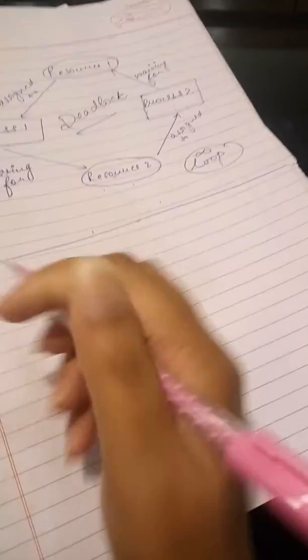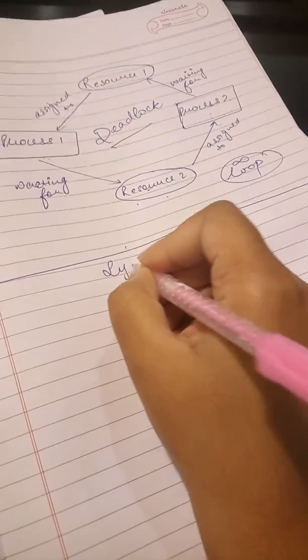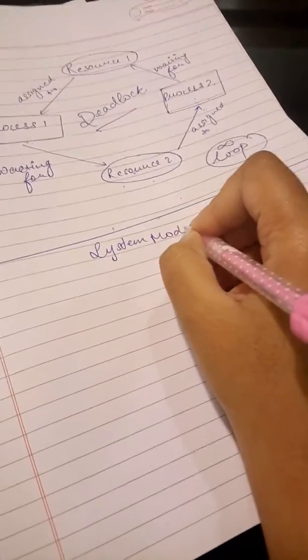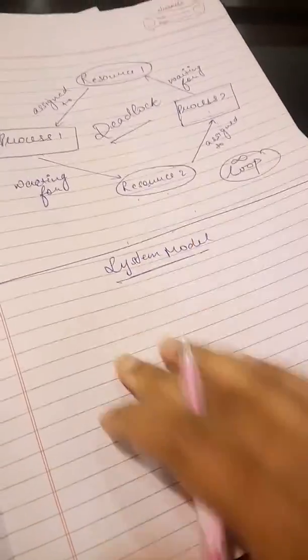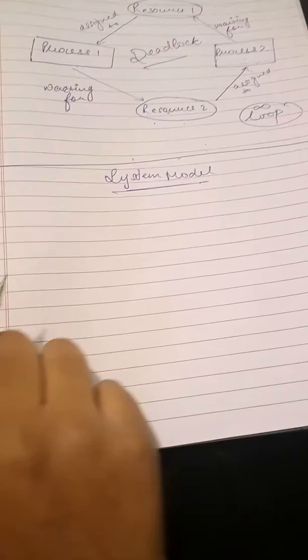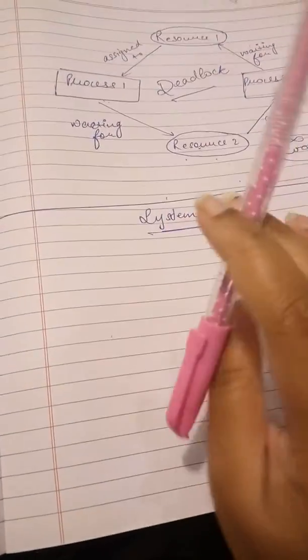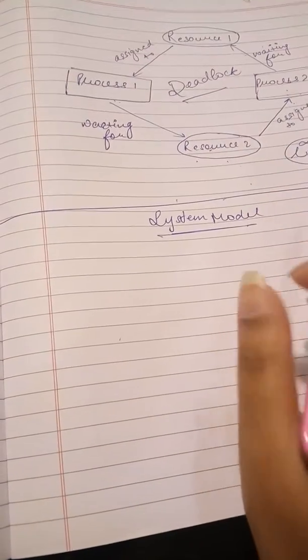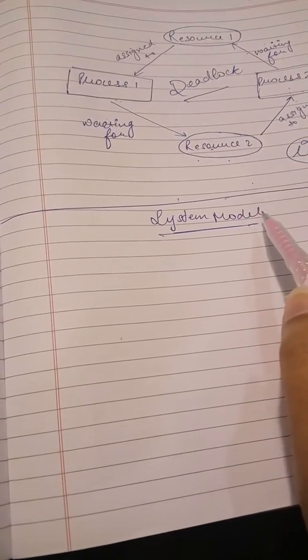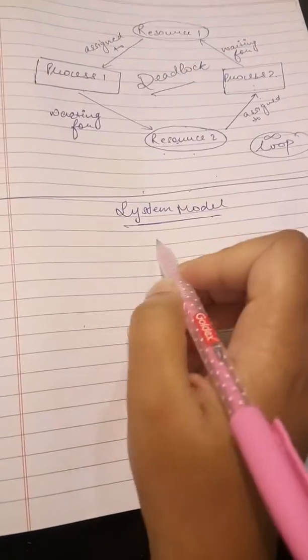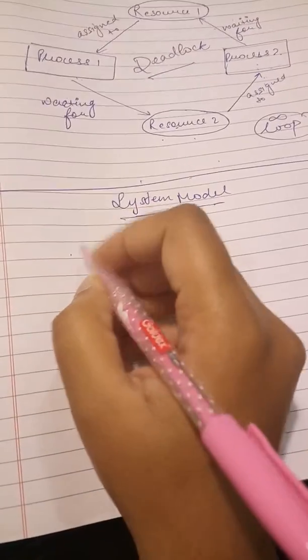So friends, now let's do system models. This is another topic which is related to deadlocks and is really important to understand. A system consists of finite number of resources to be distributed among a number of competing processes. As we talked in the last video, a computer system is having resources.